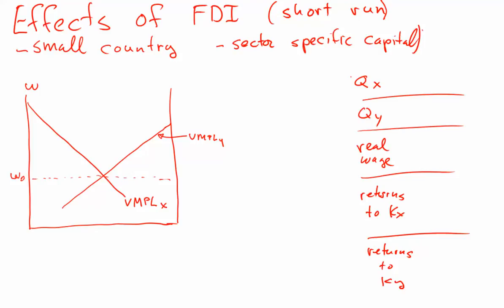As you see over on the right, we're going to be looking at the impact on the production of X, the production of Y, the real wage, the real returns to capital in X, and the real returns to capital in Y — again, holding prices fixed and allowing the amount of capital in X to rise.